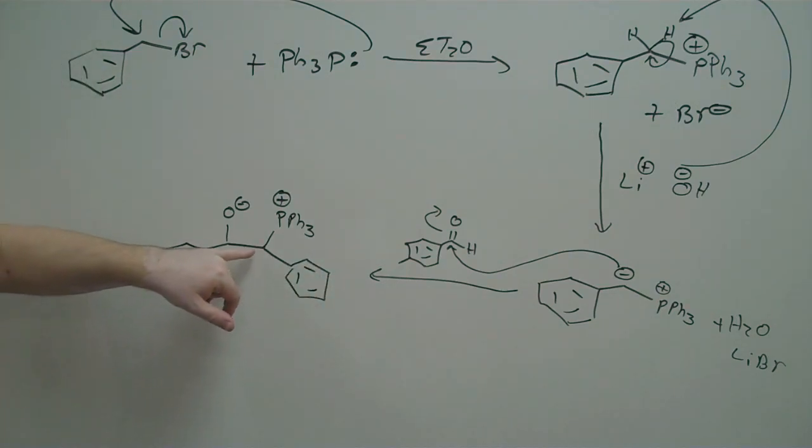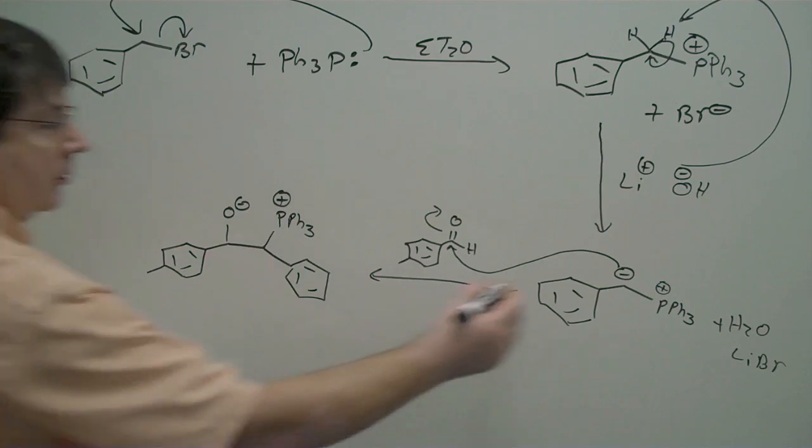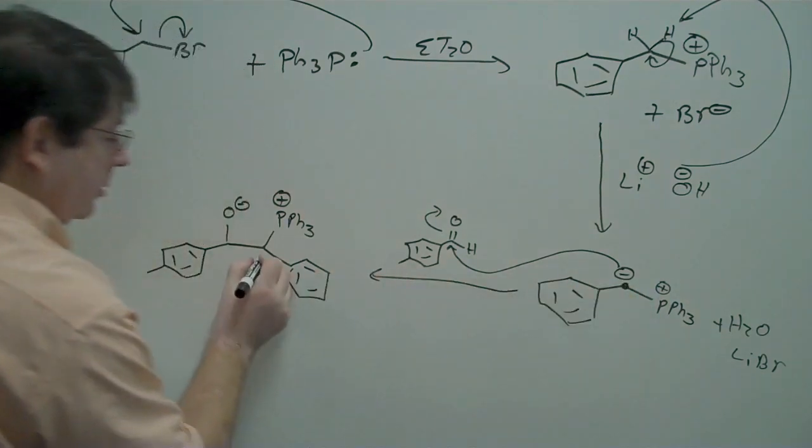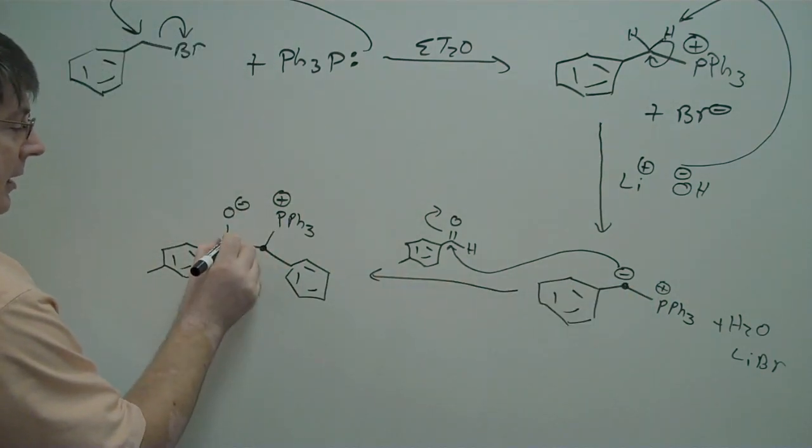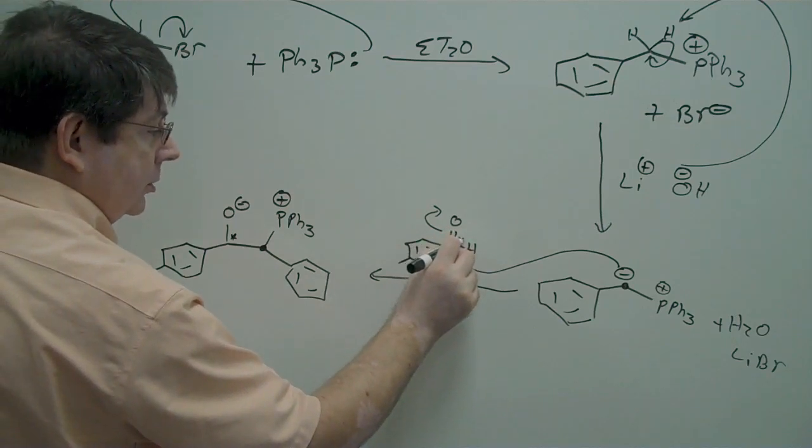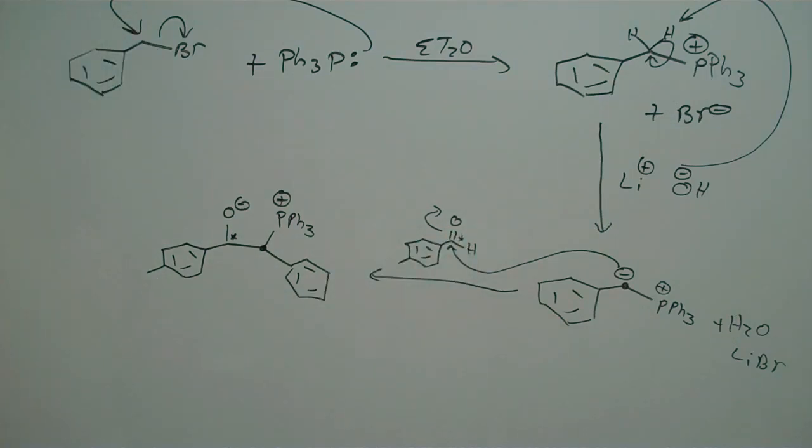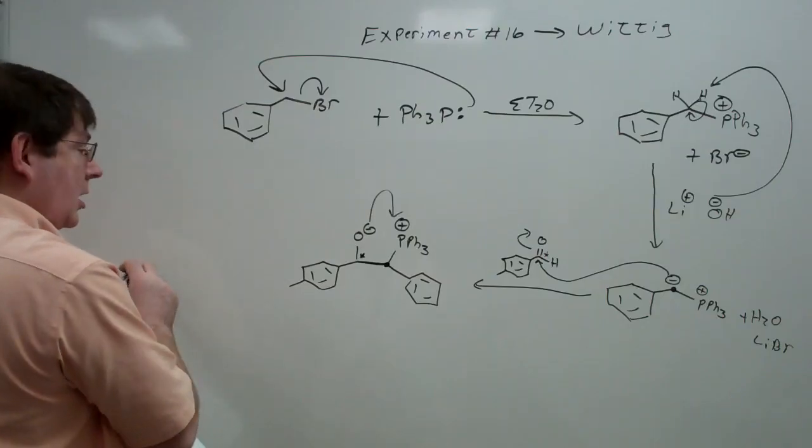Now we've just formed our new carbon-carbon bond between this carbon and this carbon. It used to be the aldehyde carbon, so we've got a new carbon-carbon bond here. And now all we have to do is get rid of the oxygen and the phosphorus, basically, and put a double bond between those two carbons. And we know that that's going to happen.